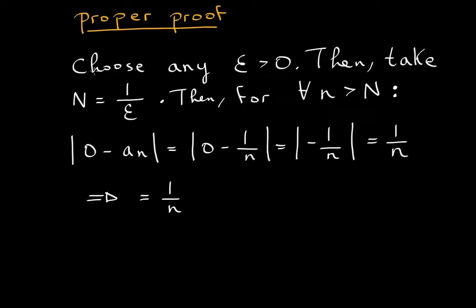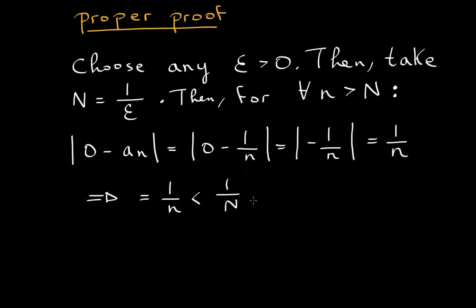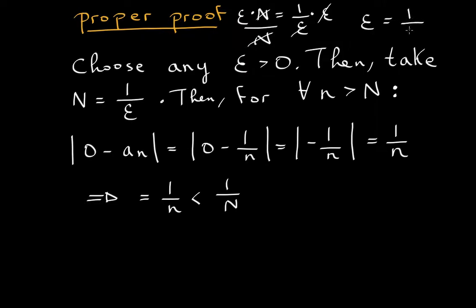We rearrange things on a scratch piece of paper. We switch epsilon with N: if you multiply both sides by epsilon and divide by big N, you get that epsilon equals 1 over N. We say this is less than 1 over N. That's because N equals 1 over epsilon from our scratch work, so multiplying both sides by epsilon and dividing by N gives epsilon equal to 1 over N. So 1 over big N equals epsilon.